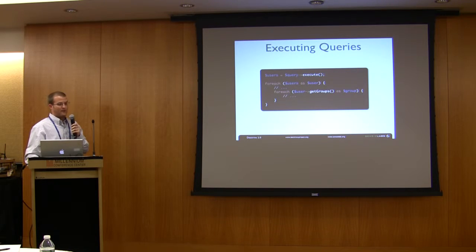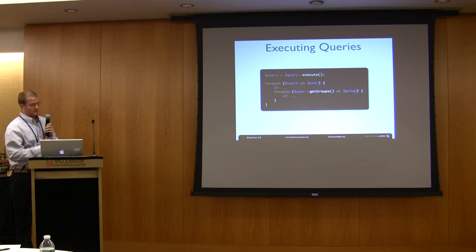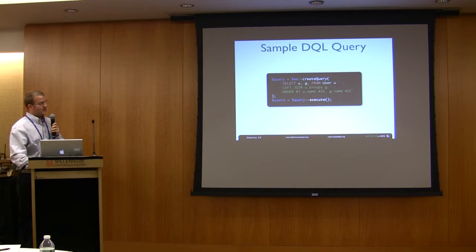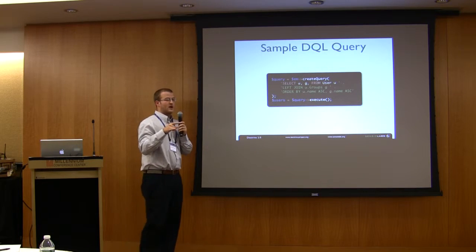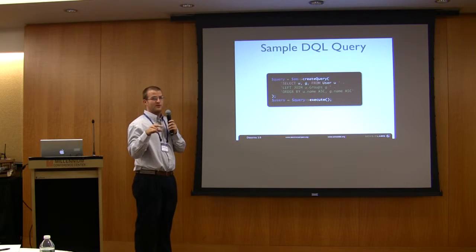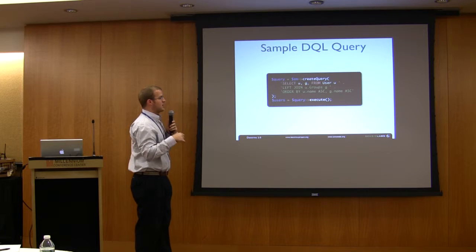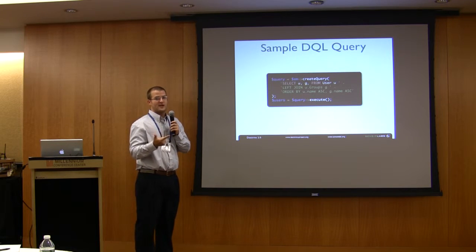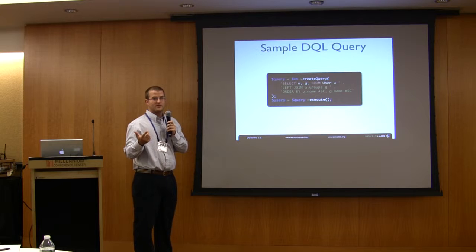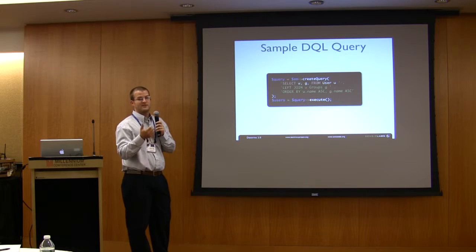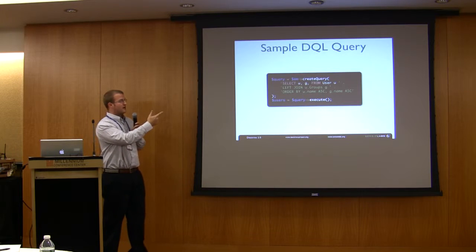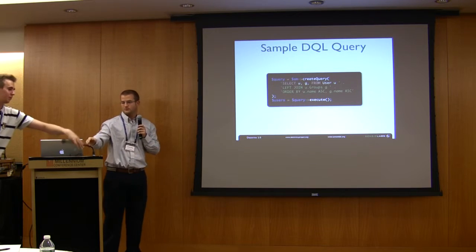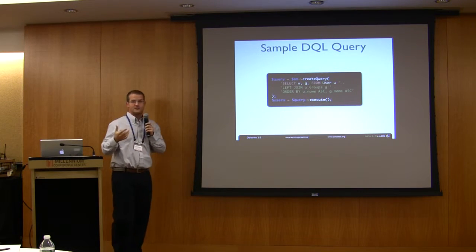Here's an example of what it would look like if we were to execute that query. Going back to this query — users and groups are not joined directly, they're joined through a reference table. You have a user table, a group table, and a user group table. The user group table has a reference to the user ID and the group ID. When I run this query, Doctrine knows about that relationship.